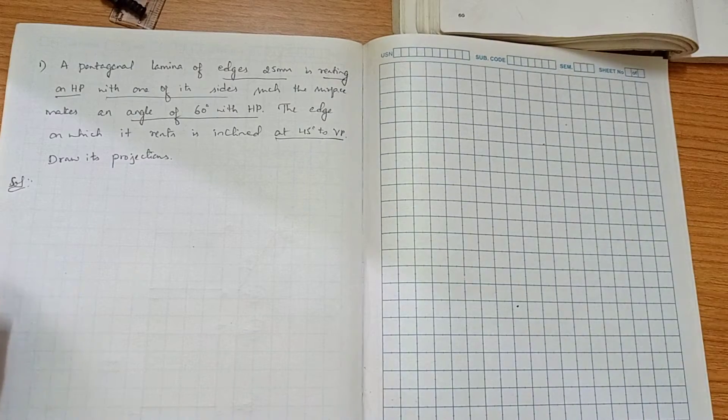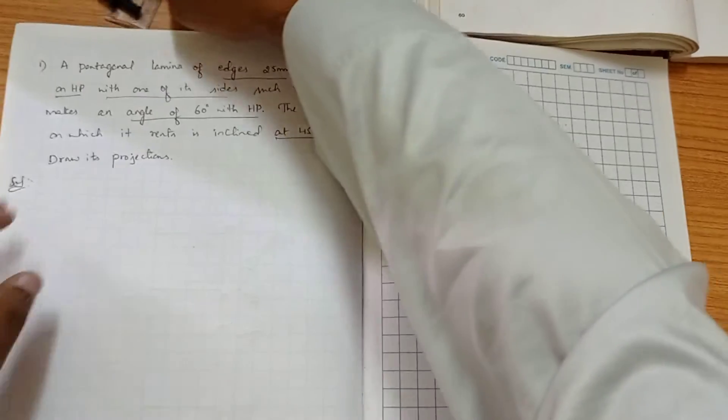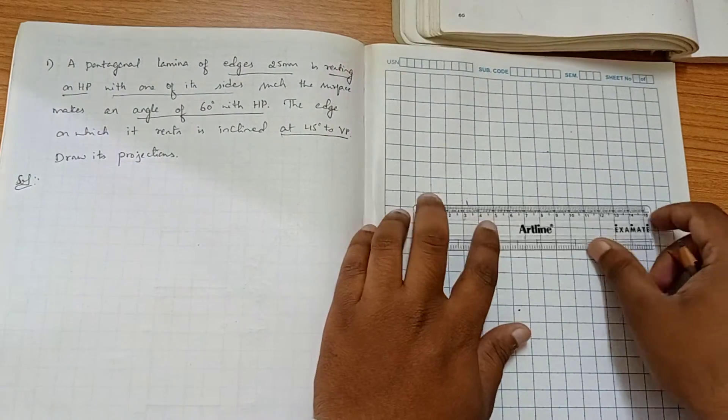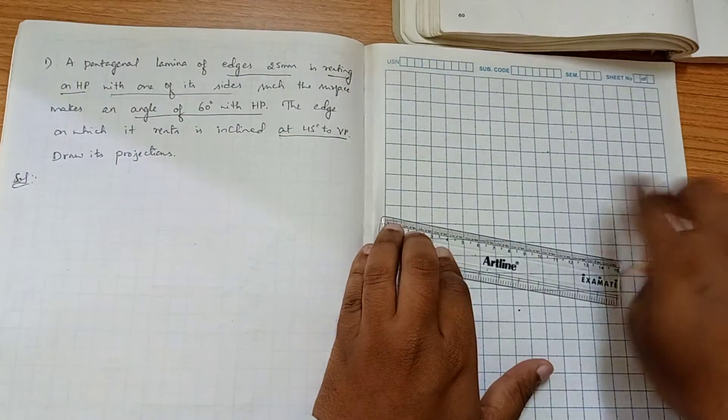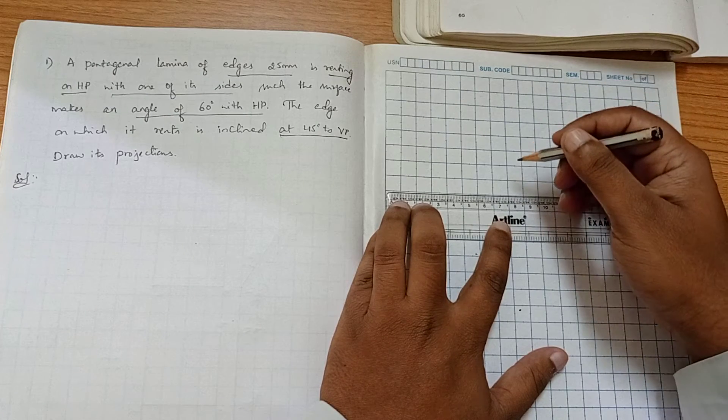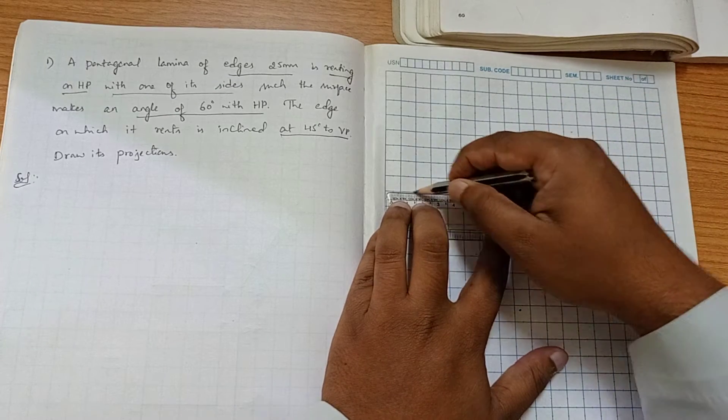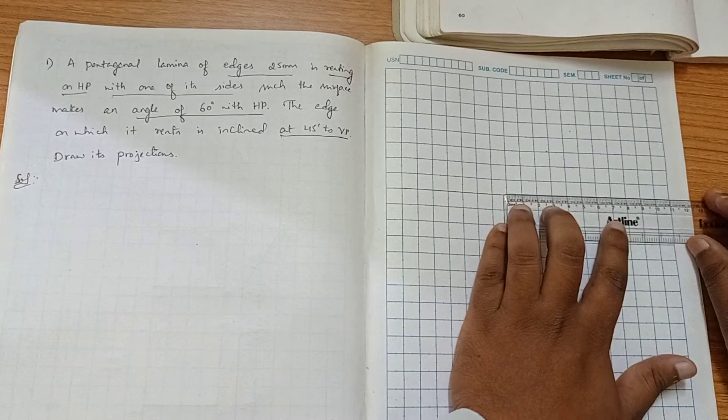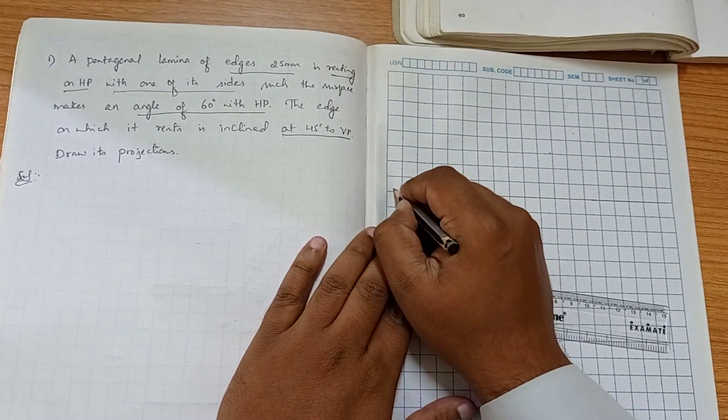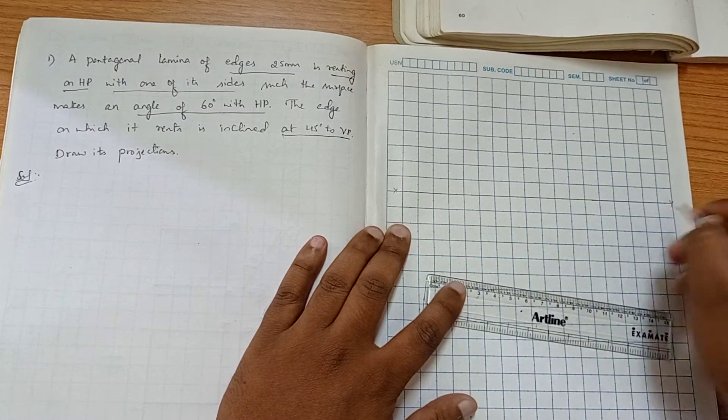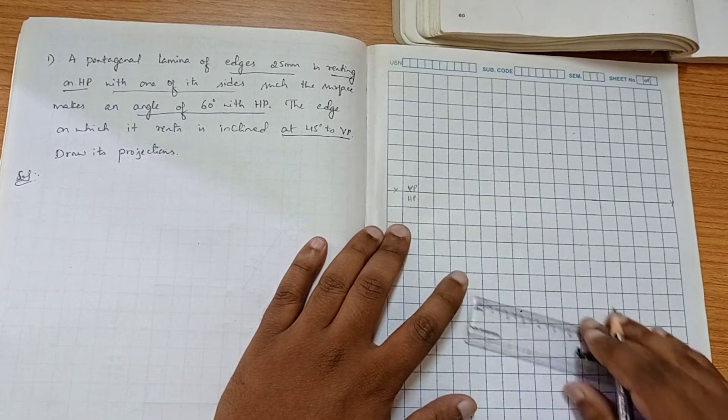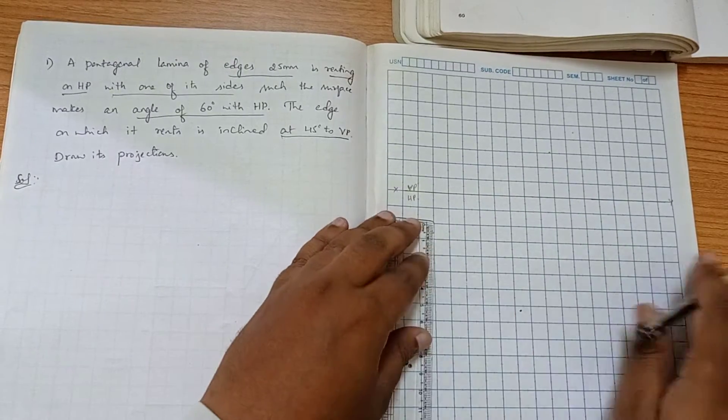So now we have to construct the first position. We know that it is in first quadrant. So we have to construct a pentagon now of dimension 25 mm.